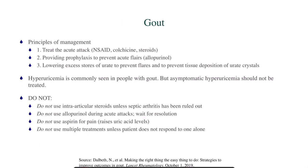The principles of management of gout: number one, treat the acute attack, typically with an NSAID. Number two, provide prophylaxis to prevent acute flares. Number three, lower excess stores of urate to prevent flares and prevent tissue deposition of urate crystals. Hyperuricemia is commonly seen in people with gout, but if labs show just asymptomatic high uric acid with no joint disease or anything else, don't treat it.